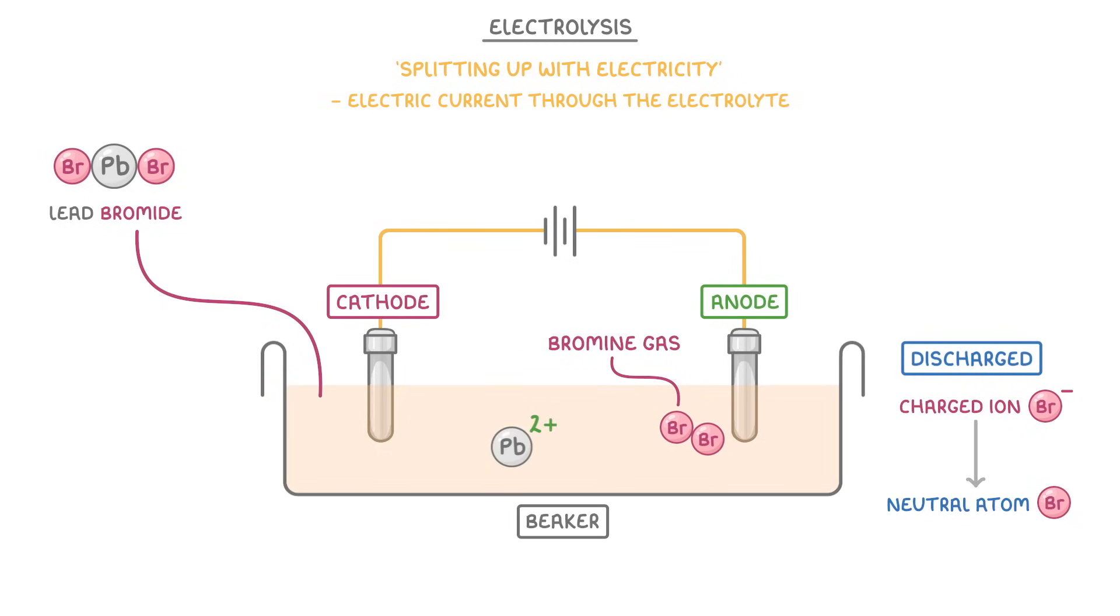Meanwhile, the positive lead ions will be attracted to the negative cathode, and again be discharged, this time to form pure lead, which will then fall to the bottom and form a layer of molten lead.